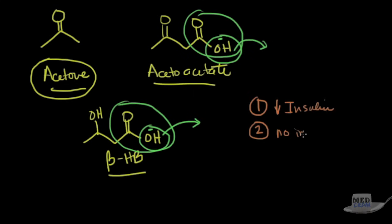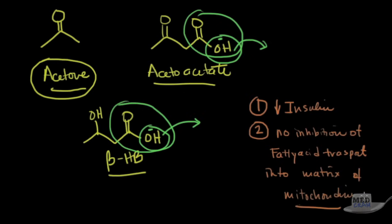Is that there is no inhibition of fatty acid transport. That's important because this means that fatty acids are pouring into the matrix of the mitochondria as we showed you on the last slide.